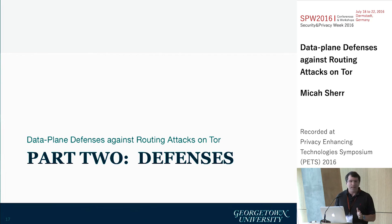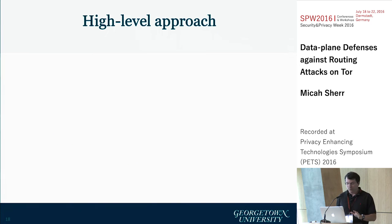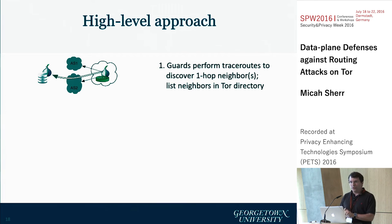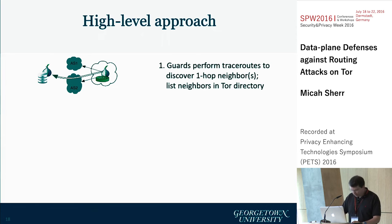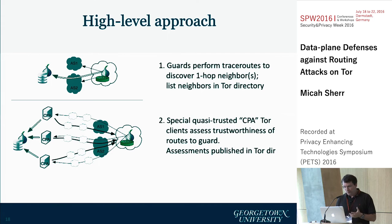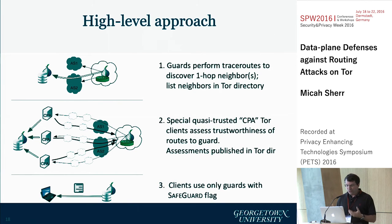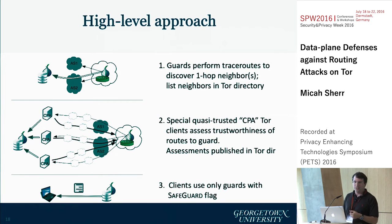The second half of our paper is to look at defenses — what can TOR do about this, if it cares to do anything about it. The high-level approach is as follows: guards are going to use trace routes to discover their one-hop AS neighborhood. They attest to that neighborhood by including it in TOR descriptors, leveraging TOR's existing PKI, so that clients can authenticate that information. We're introducing these quasi-trusted CPA nodes — special TOR clients which assess the trustworthiness of routes to guards. These assessments are published in TOR directories. Based on their assessments, we assign guards either a safeguard flag, in which case clients will use them, or no safeguard flag, in which case clients should avoid their use.